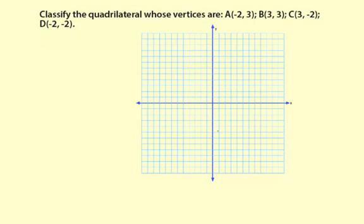Classify the quadrilateral whose vertices are A(-2, 3), B(3, 3), C(3, -2), and D(-2, -2).